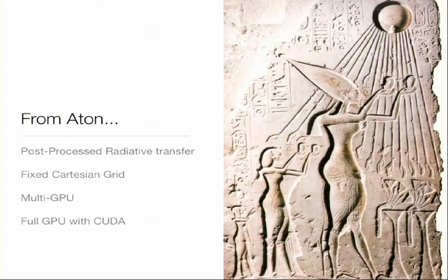So first, ATON. As I said previously, ATON was thought to provide light to Ramses, and this is a post-processing radiative transfer code. It works on a fixed Cartesian grid, and this is a loaded GPU code, and this is a full GPU code. Let's explain this just after.